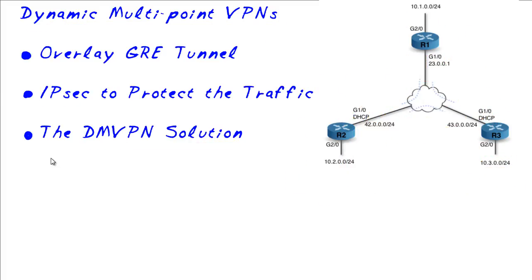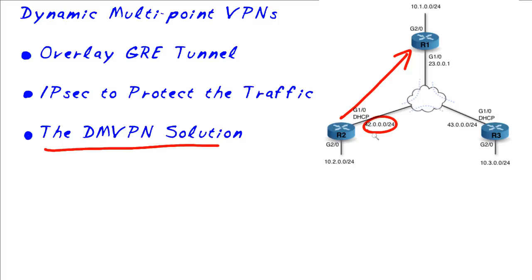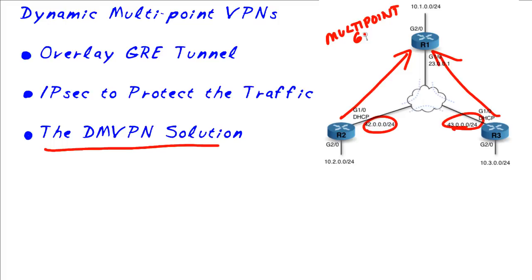So let's look at Dynamic Multipoint VPN as a whole solution. When devices come up on the internet, they report to the hub, sharing whatever IP address they've been given — via DHCP, PPPoE, or even a static address. Once both routers have reported their global interface IP address, they'll also join the common multipoint GRE network — something like 10.60.1.0 — with direct connections between R2 and R1, and R3 and R1.